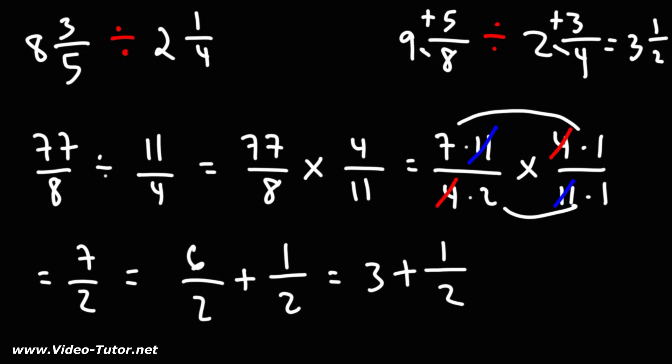So that's 3 and 1 halves. That is the answer. So that's how you can divide two mixed numbers together. You want to convert the mixed numbers into improper fractions, change the division problem to a multiplication problem using keep change flip, cancel any common factors if possible, and then if you have the answer as an improper fraction, convert it back to a mixed number.